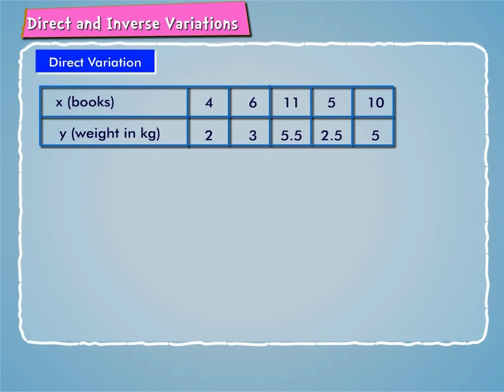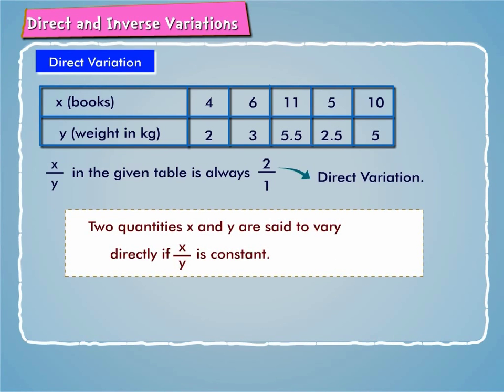As we can see, x by y in the given table is always 2 by 1. This is another example of a direct variation. Thus, two quantities x and y are said to vary directly if x by y is constant.